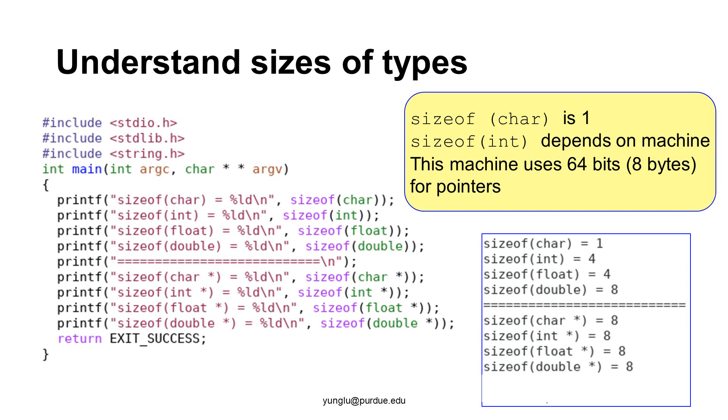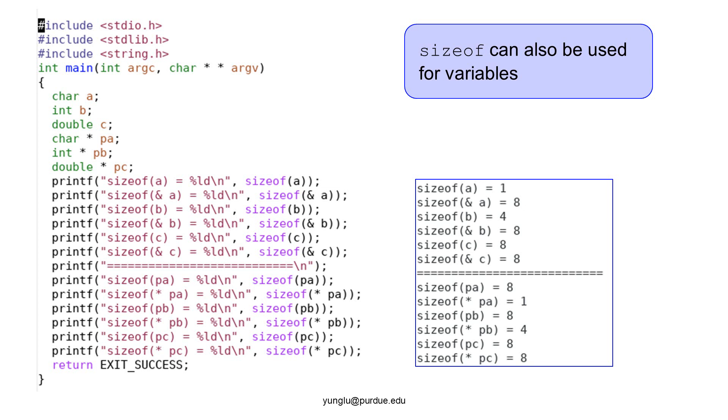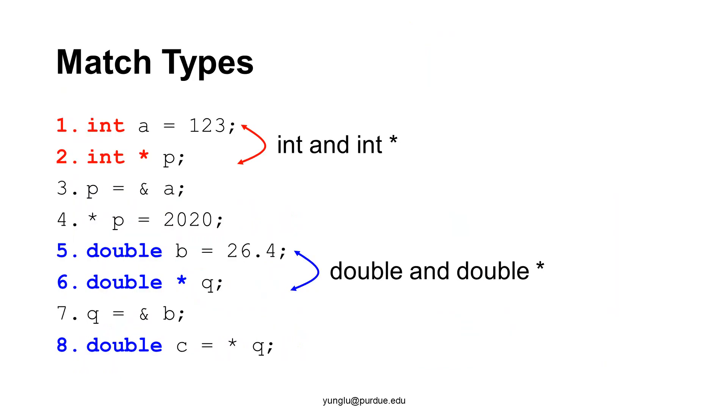The previous slide uses data types as the input to sizeof. We can also give variables to sizeof. In this example, sizeof reports the sizes of a, b, and c. When we add ampersand in front of a, b, or c, we get the addresses and the sizes are always 8 because this machine uses 64 bits for the size of pointers. If we add asterisk in front of the pointers, sizeof reports the sizes of char, int, and double. Thus, the values are 1, 4, and 8.